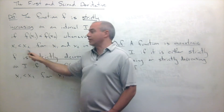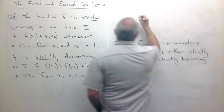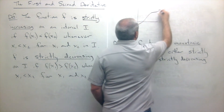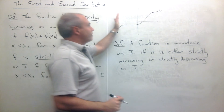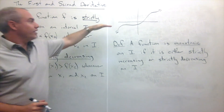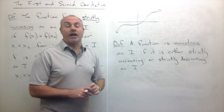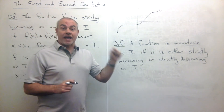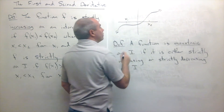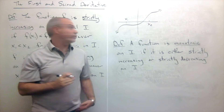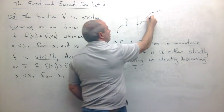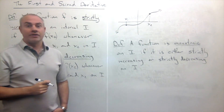Let me draw a quick picture of this. Let's say we have a function that looks something like this — you can notice that as I go from the left side to the right side, this thing is going upward; it never goes down. At this one point it seems to be flat but it never goes down. If this is x1 and this is x2, it doesn't matter where I draw them on this graph, as long as x1 is less than x2, then the functional value of x1 is less than the functional value of x2.